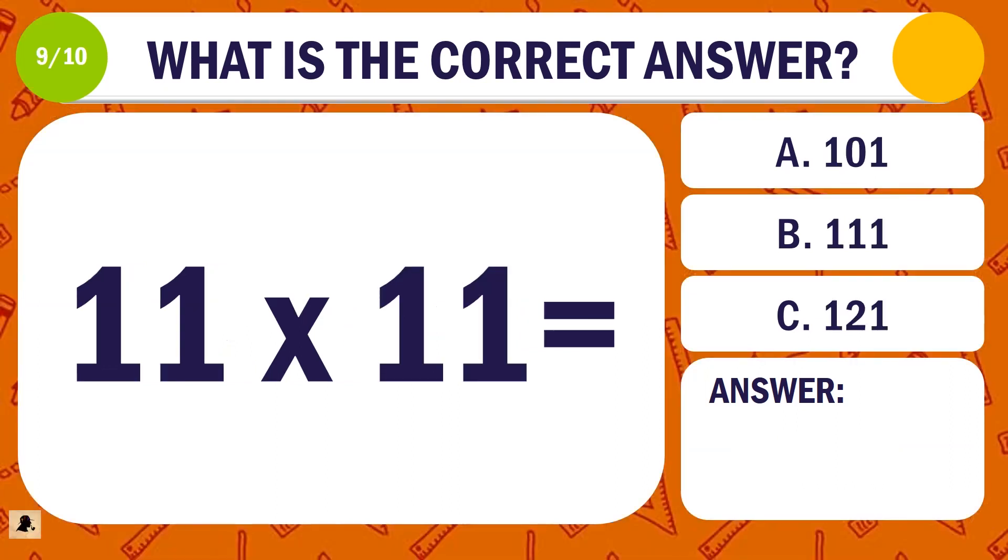Question 9. What is the correct answer for 11 times 11? A. 101. B. 111. Or C. 121.